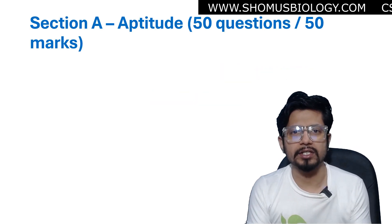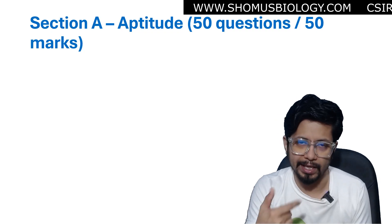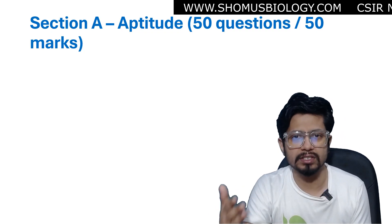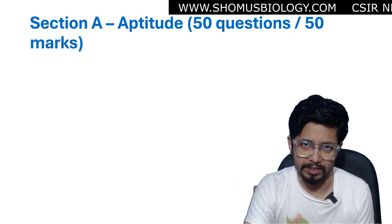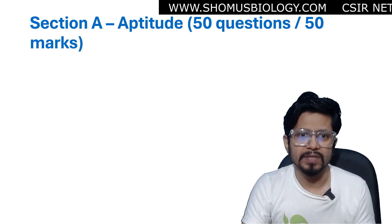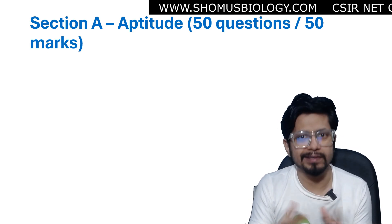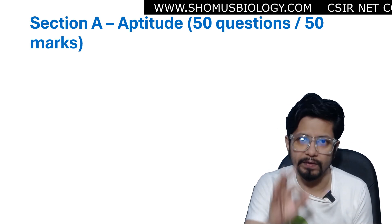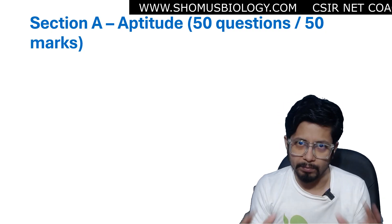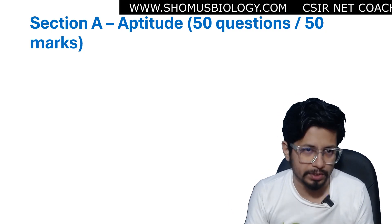There are three sections of the ICMR BRETT examination: Section A, B, and C. All three sections are compulsory. Section A is the aptitude and reasoning section — 50 questions will be from this section, total 50 marks, one mark for each question.